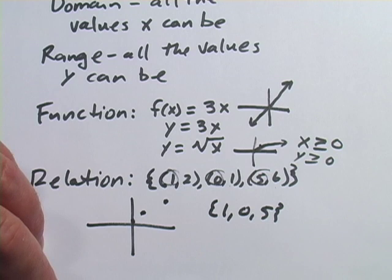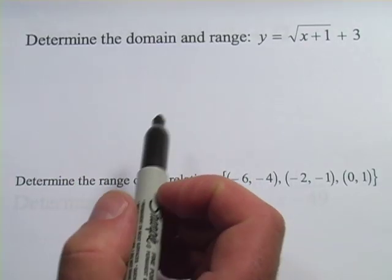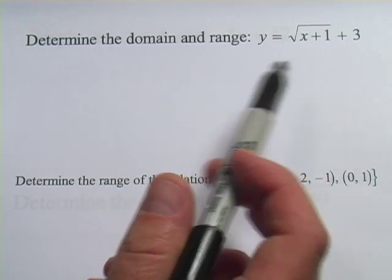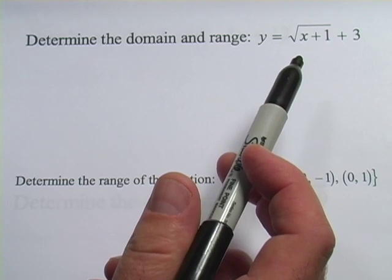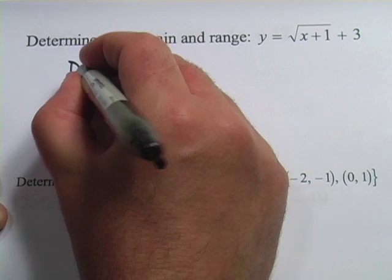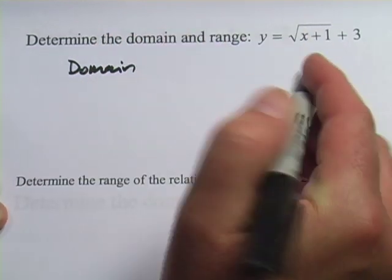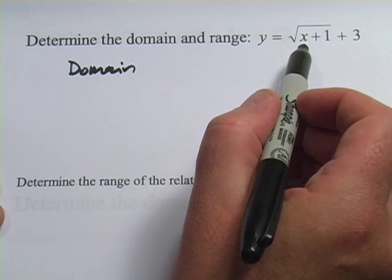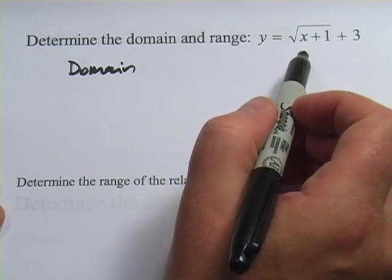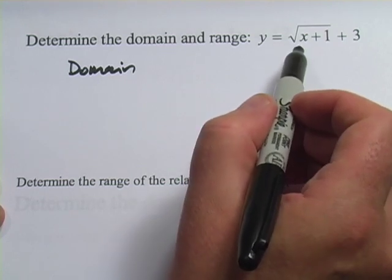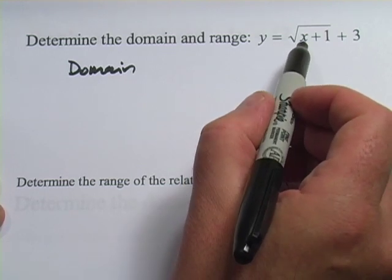Let's take a look at some problems likely to pop up in this area. The first one says determine the domain and range, and gives the function y equals the square root of (x plus 1) plus 3. To start with the domain — remember that's everything x can be — I want to ask myself: can I put something in for x that's going to make this not work? The answer is yes, because I see a square root symbol, which should set off an alarm bell.